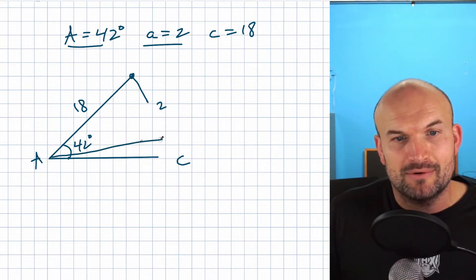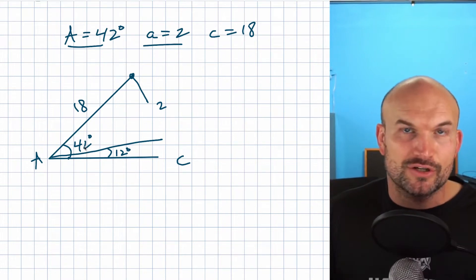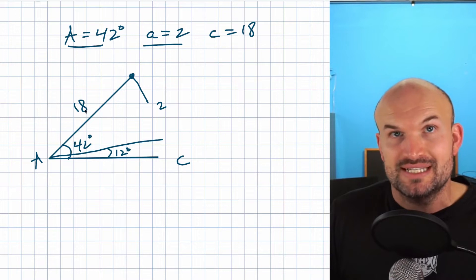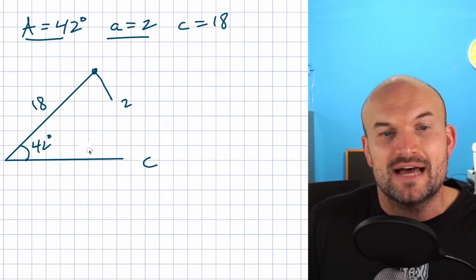But when we're dealing with 42 degrees or anything higher, and this side length is really short compared to this side, then obviously we can see that no triangle is going to exist based on those numbers.